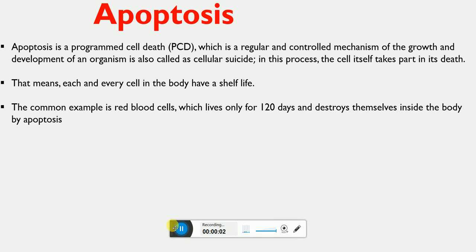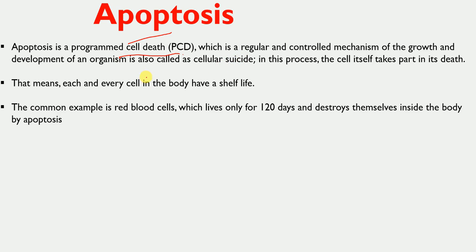In this video, I'm going to talk about the differences between apoptosis and necrosis. These are the two different mechanisms by which cells in a multicellular organism die. Apoptosis is programmed cell death, which is a regular and controlled mechanism of the growth and development of an organism. This programmed cell death is also called cellular suicide.